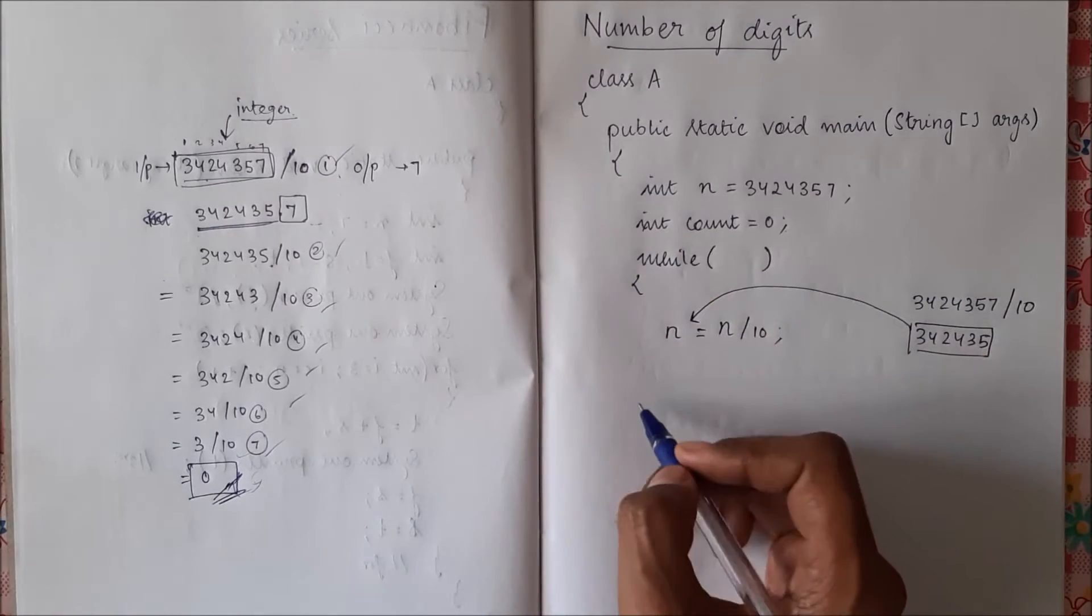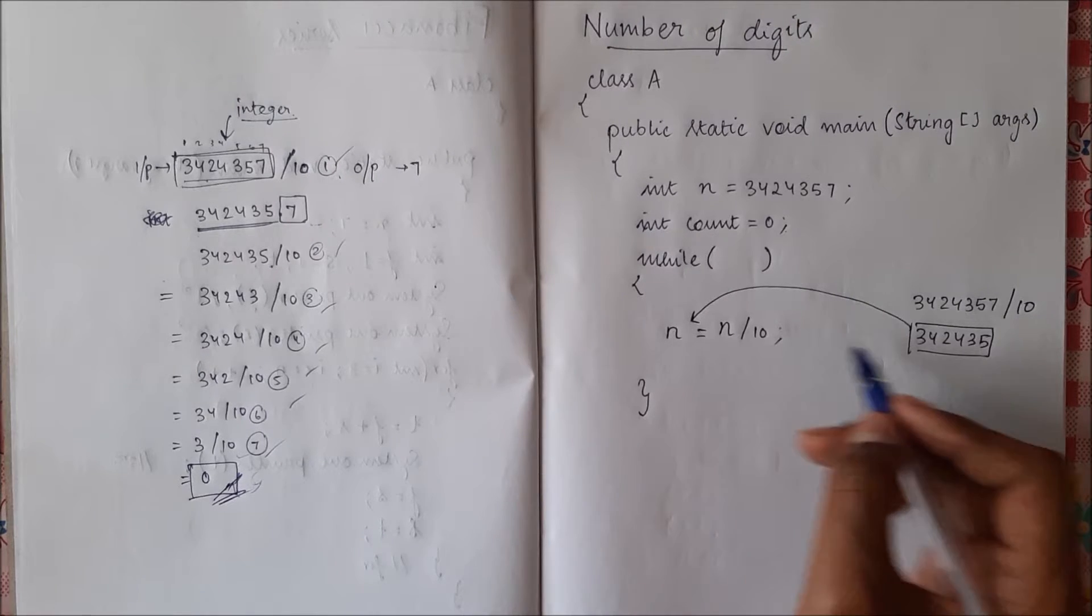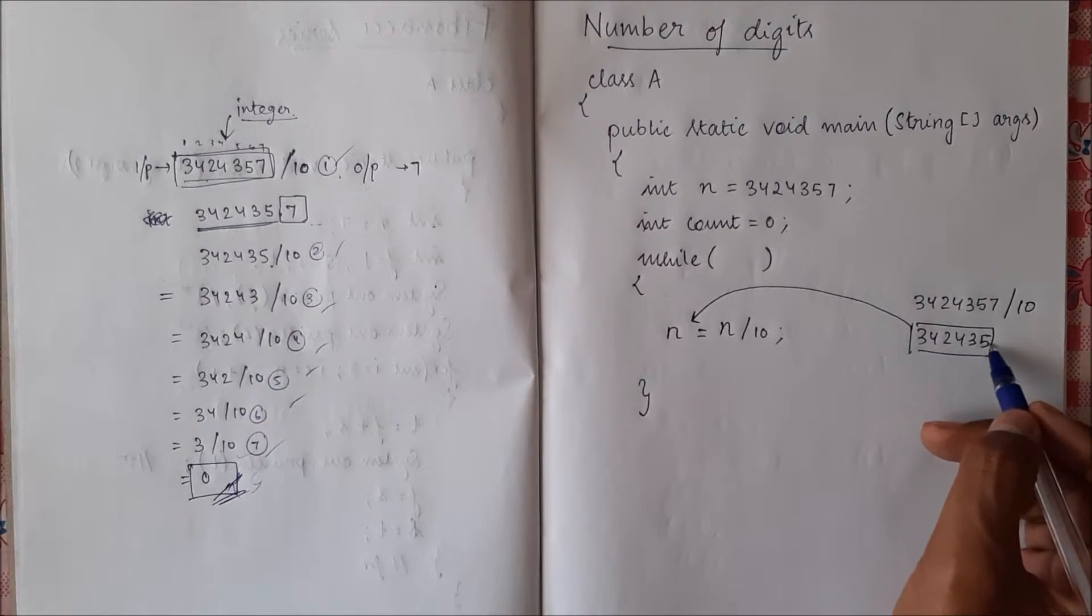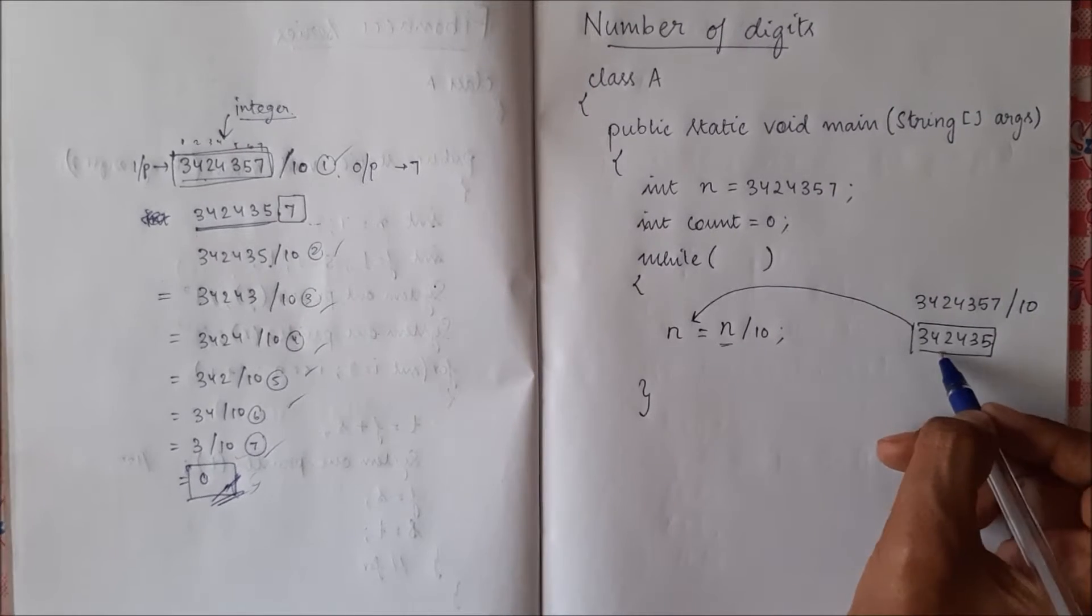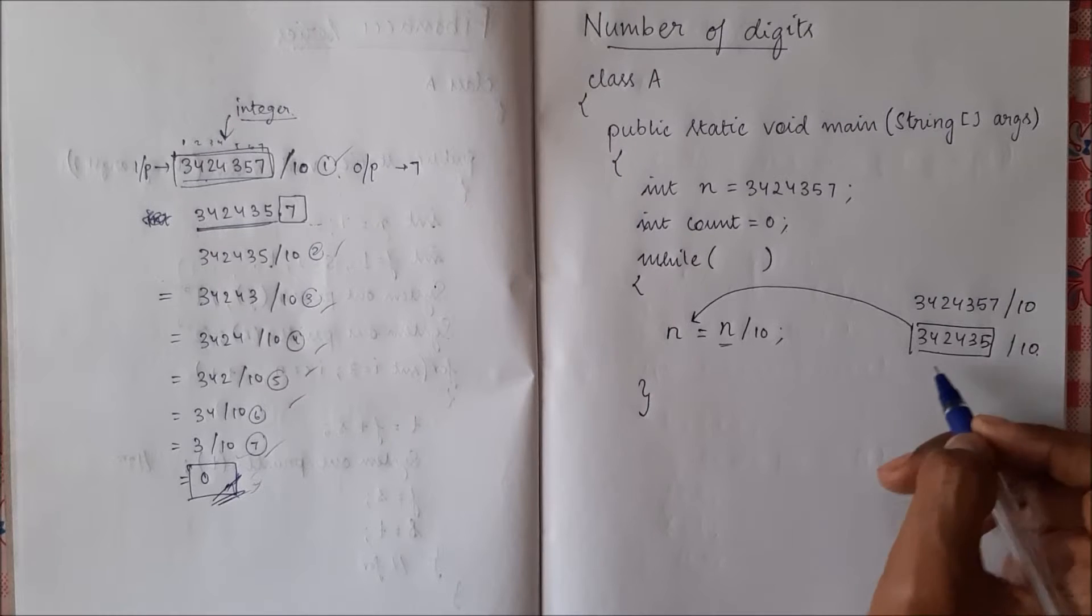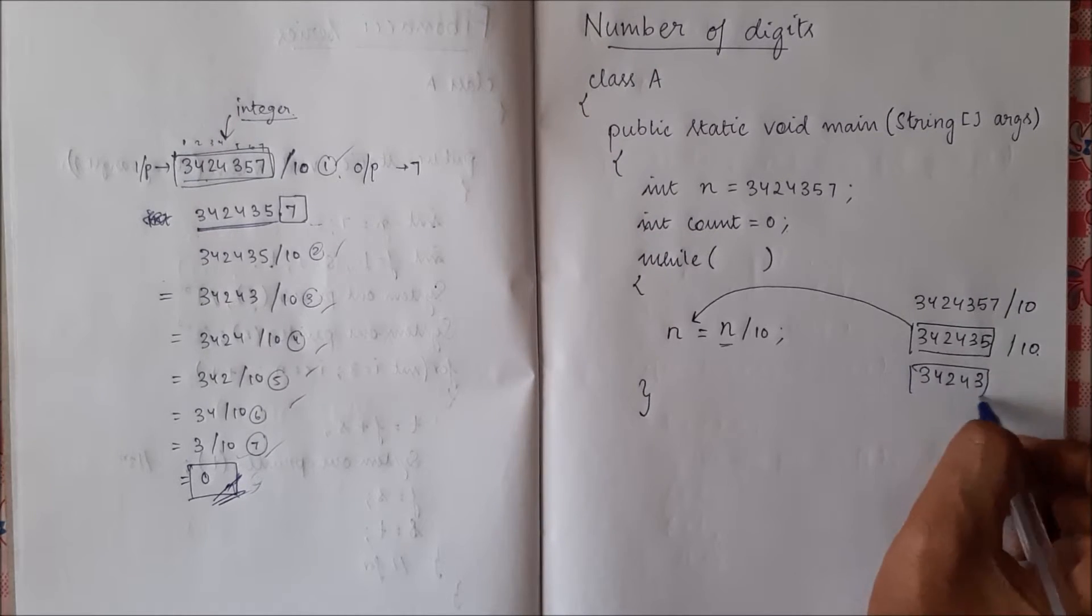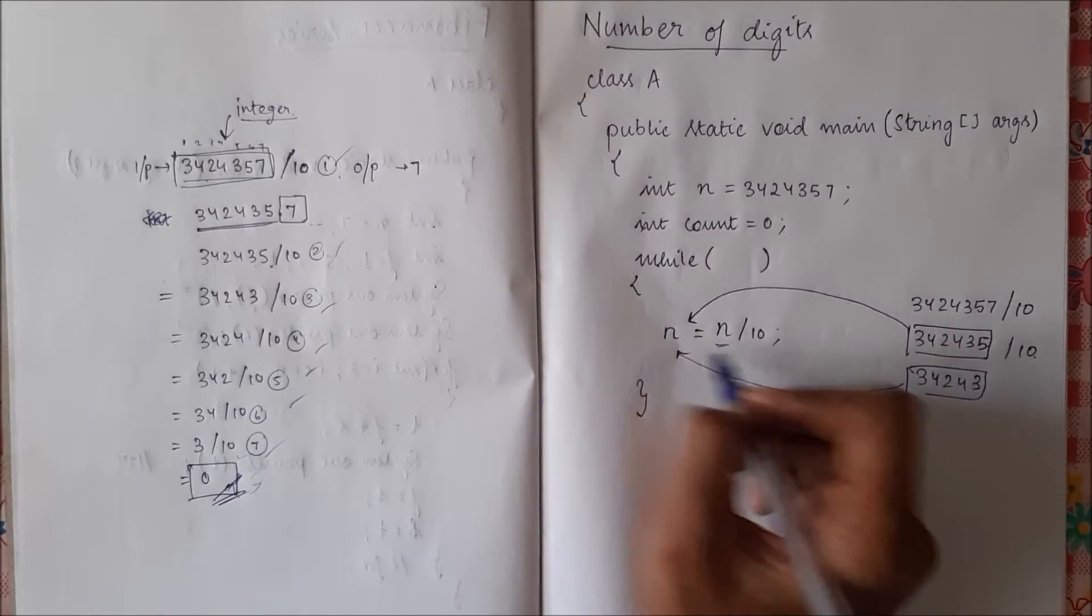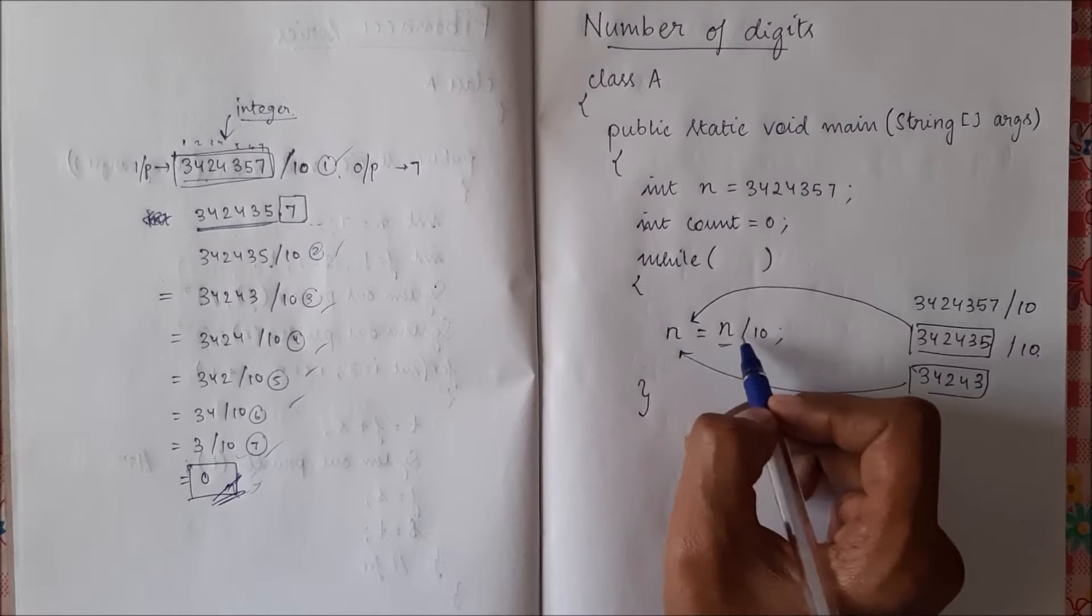So next time when the loop runs, our n is 342435. This n is 342435, again it will be divided by 10, the result will be this. This will be again stored to this, so this way it will keep on iterating.